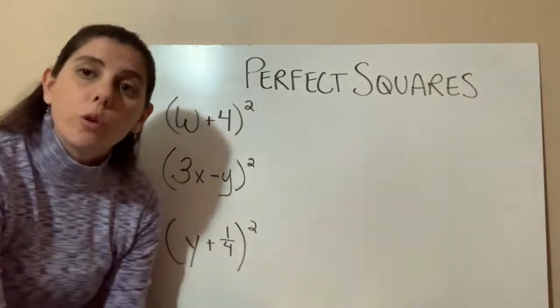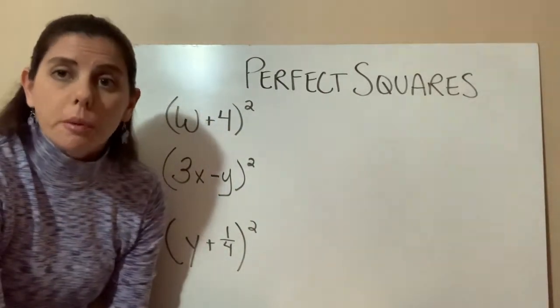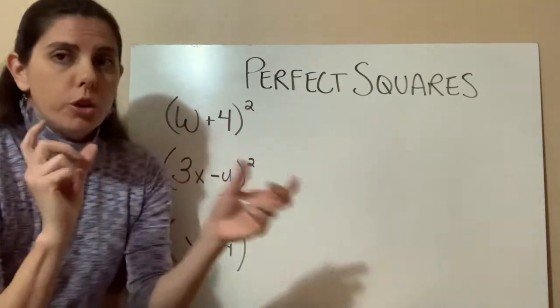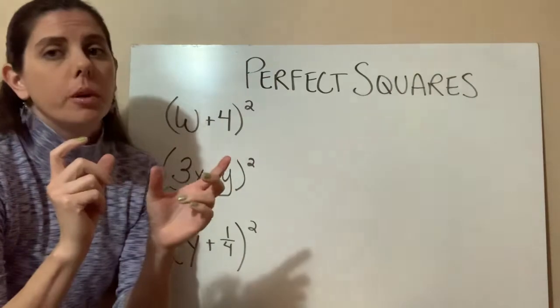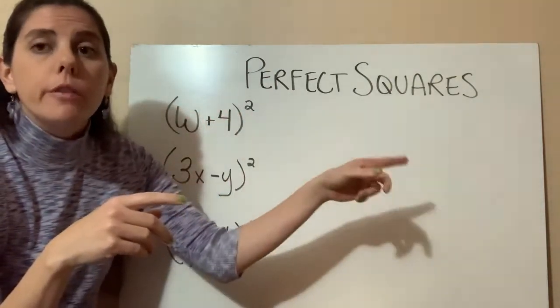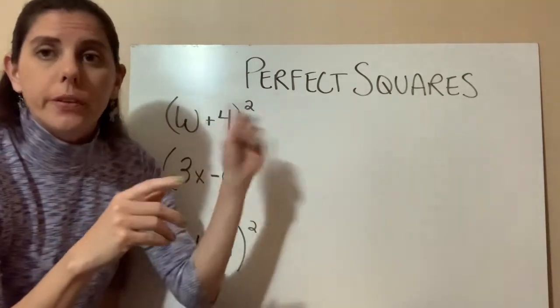Starting in section 6.4, we're going to be learning about special products. So there are some binomials that when you multiply with another binomial, it will create what we call a special product. One of those is called the perfect square trinomial, so perfect squares.